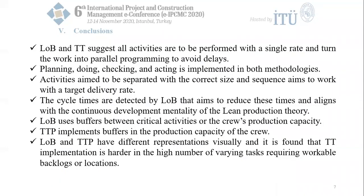As a conclusion, line of balance and takt time suggest all activities are to be performed with a single rate, turning work into parallel programming to avoid delays. Planning, doing, checking, and acting is implemented in both methodologies. Activities aim to be separated with the correct size and sequence to work with a target delivery rate. LOB detects and aims to reduce cycle times, aligning with the continuous development mentality of lean production theory. LOB uses buffers between critical activities or the crew's production capacity, while takt time planning implements buffers in the production capacity of the crew. LOB and takt time planning have different visual representations, and takt time implementation is found to be harder with a high number of varying tasks requiring workable backlogs or locations.